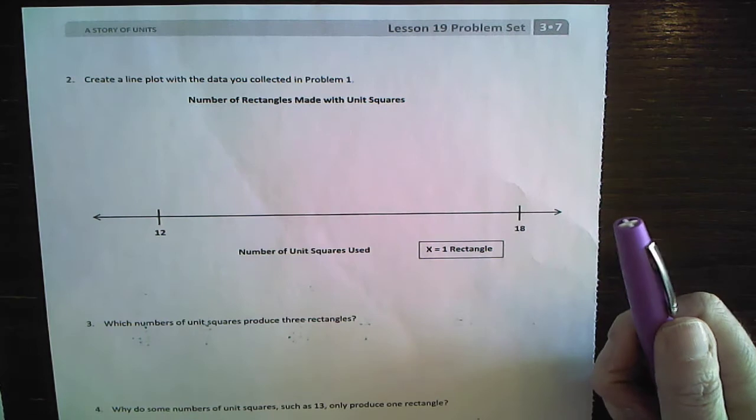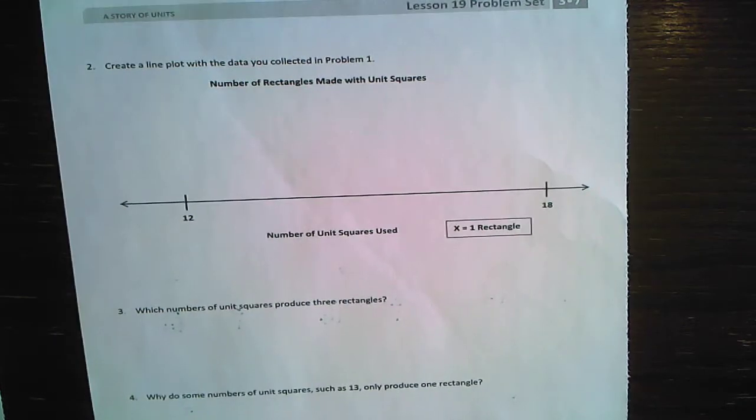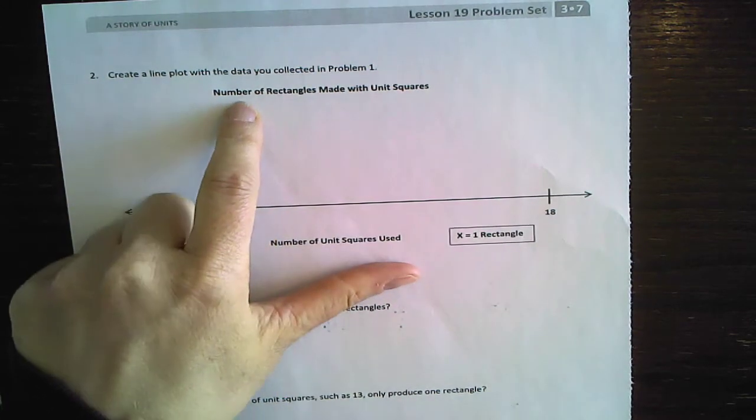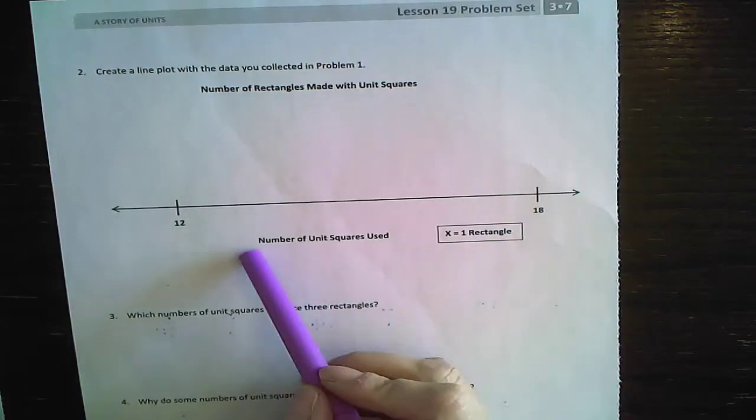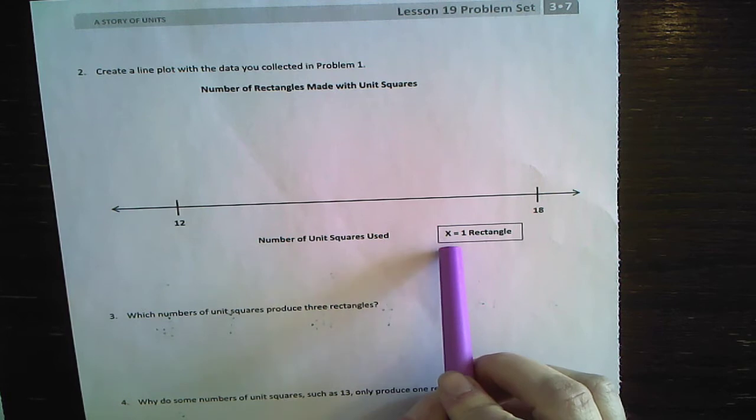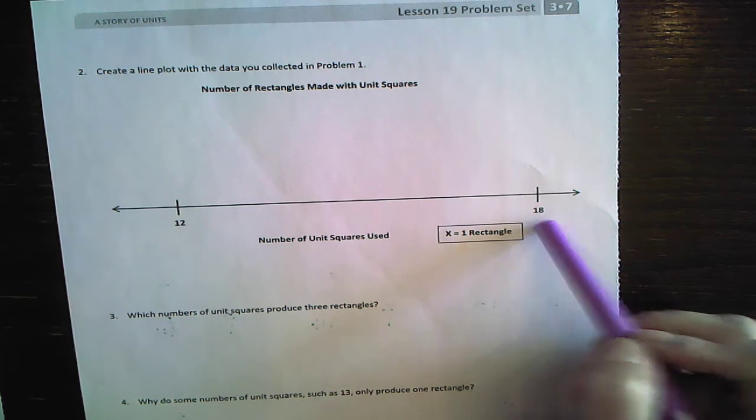All right. Welcome back. We are going to, now, we get to make a line plot. Do you remember when we made line plots, how much fun that was? We get to do it again. So let's read number two together. I bet you know what it says. It says, create a line plot with the data you collected in problem one. Okay. So let's kind of figure out, I can see my title. It says number of rectangles made with unit squares. And here's my label down here, number of unit squares used. We're going to represent one rectangle with an X. Okay.